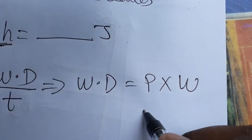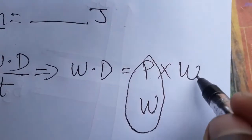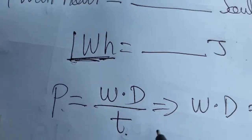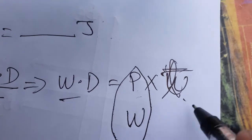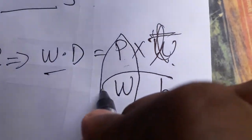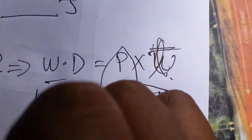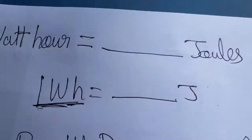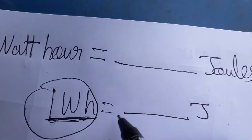The SI unit of power is watt, and for time we can take seconds, minutes, or hours — here it is given as hours. So watt-hour represents work done, which we can also call energy. That means the SI unit of energy here is watt-hour.